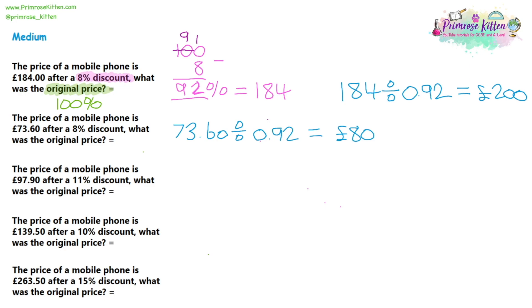That's the original price of the mobile phone. Perhaps at the end, just make sure it makes sense. Does it make sense that the original was £80, and the discounted version was £73.60? Well, the discounted version is less money, so this looks about right. If you made a mistake, it might be that the discounted version might be worth more money, or it might be worth a ridiculously small amount of money that doesn't really make sense.